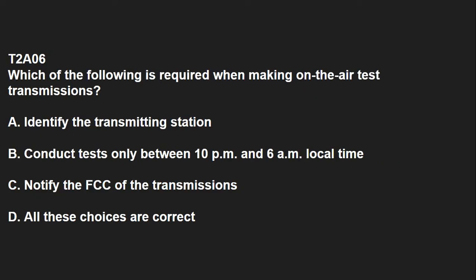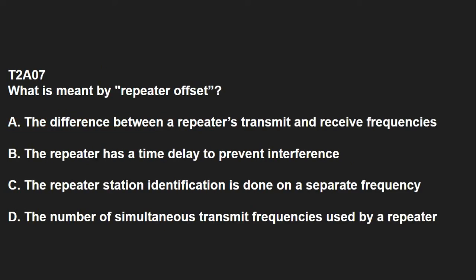T2A06: Which of the following is required when making an on-the-air test transmission? You need to identify the transmitting station — give your call sign. T2A07: What is meant by a repeater offset? That is the difference between a repeater's transmit and receive frequencies.